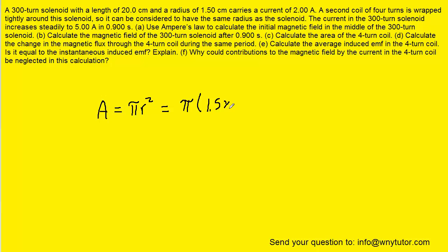So we can go ahead and plug in 1.5 times 10 to the minus 2 meters, square it to get the area. We get roughly 7.07 times 10 to the minus 4 meters squared. This is the correct answer to part C.